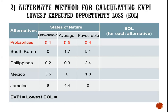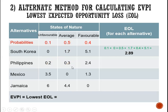Our regret table we have, and we now incorporate the probabilities. For South Korea, the expected opportunity loss is equal to 0.1 multiplied by 0, plus 0.5 multiplied by 1.7, plus 0.4 multiplied by 5.1. And that gives us 2.89 million. For Philippines, we have 0.1 multiplied by 0.2, plus 0.5 multiplied by 0.3, plus 0.4 multiplied by 2.4. The sum of these is 1.13 million.